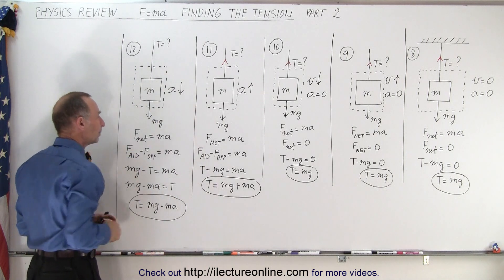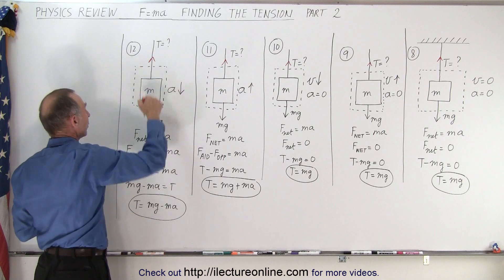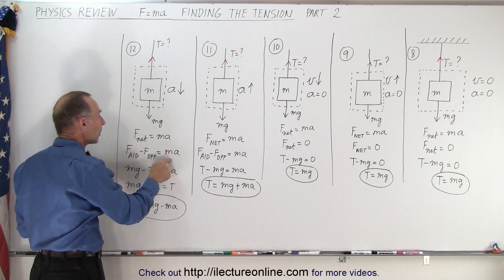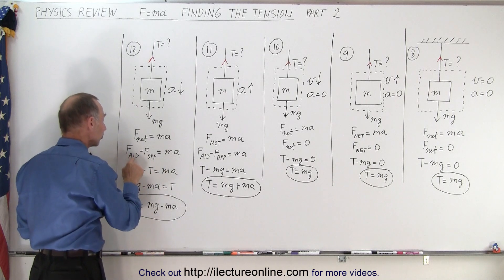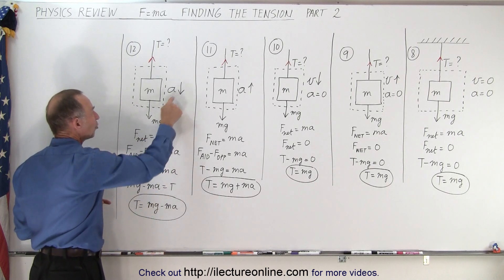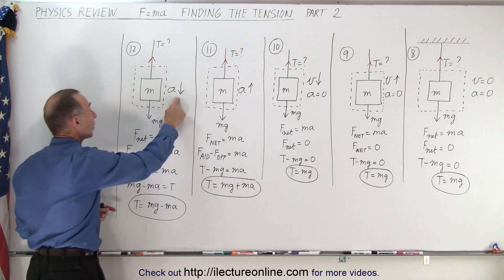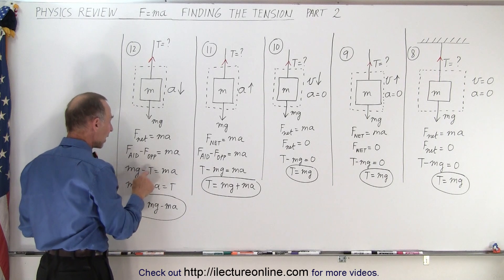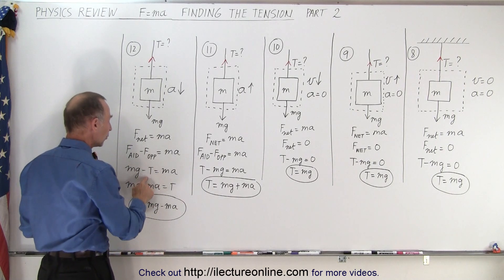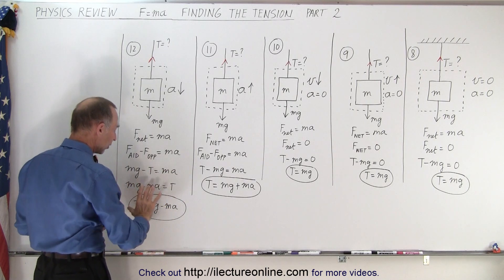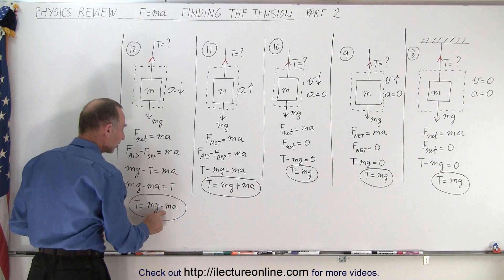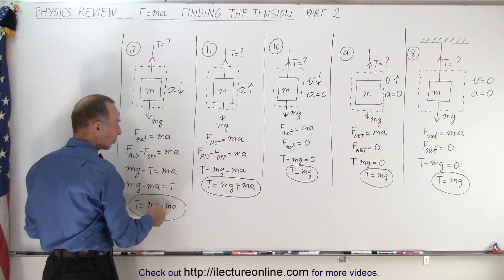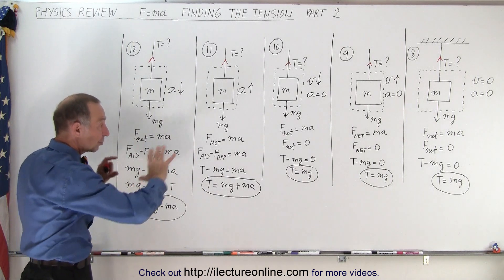What if the object is accelerating downward? Again, we have the tension acting up and the weight acting down. The net force equals ma, but now the aiding force is in the same direction as the acceleration — so mg is the aiding force, and the tension is the opposing force. So mg minus tension equals ma. Moving T to the right and ma to the left, the tension equals mg minus ma. That makes sense: if it takes extra force to accelerate it upward, it takes less force to accelerate it downward, and that's where the minus ma comes from.